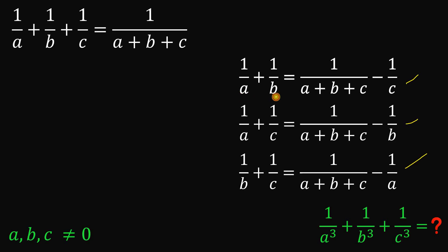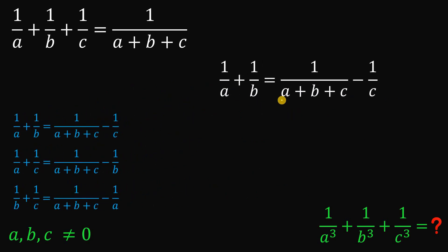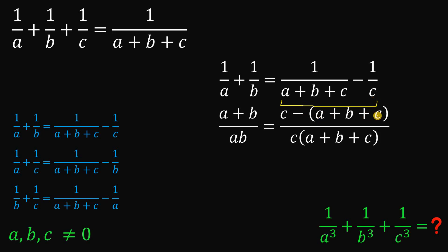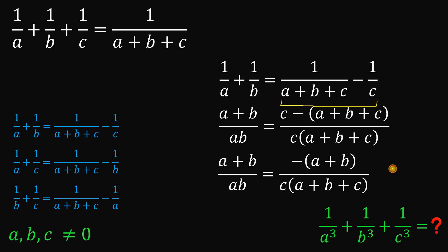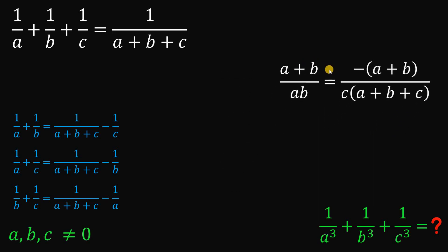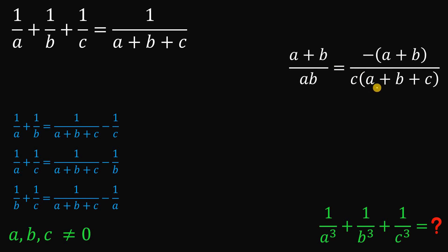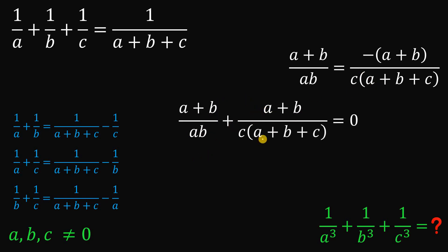Let's focus first on the first case. We're going to combine the two terms on the right-hand side of our equation. If we do that, we get C minus the quantity A plus B plus C, all over the product of C and A plus B plus C.